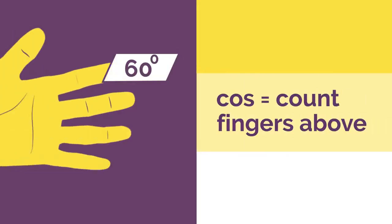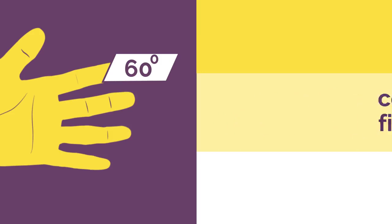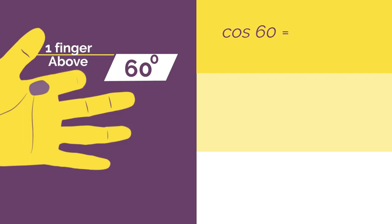For cos, we just count the fingers above instead of the ones below. So for cos 60, bend down your 60 finger and count the fingers above. 1. So cos 60 is square root 1 divided by 2, which simplifies to a half.